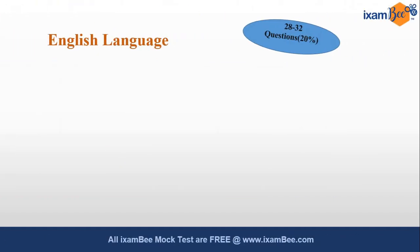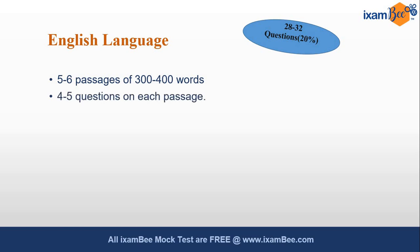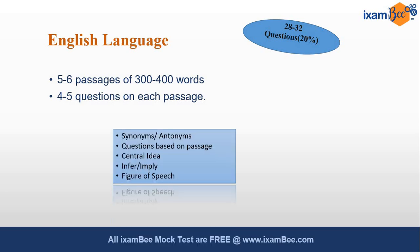The first section is English language, which holds a weightage of 20%. There will be 5 to 6 passages of 300 to 400 words and 4 or 5 questions based on each passage. From our analysis of previous year question patterns, mostly the questions were from these areas: synonyms and antonyms, questions based on the passage, the central idea of the passage, what the passage inferred or implied, and the figure of speech used by the author.